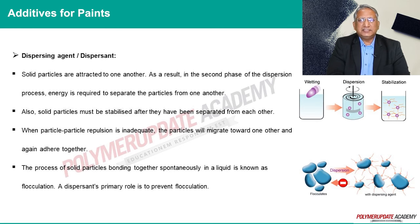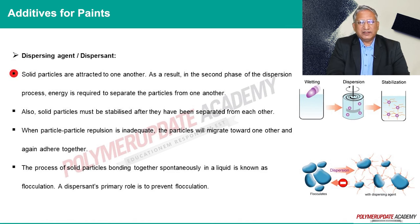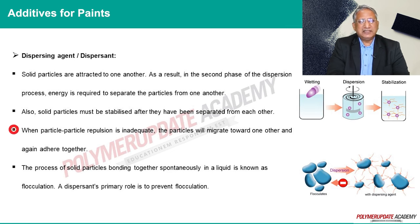Dispersing agents: solid particles attract each other; for this reason energy is needed to separate the particles from each other in the second step of the dispersion process. Also, solid particles must be stabilized after they have been separated, otherwise they will move toward each other and glue together again when particle-particle repulsion is insufficient. The spontaneous process of gluing together of solid particles in a liquid is called flocculation.